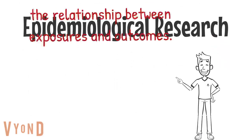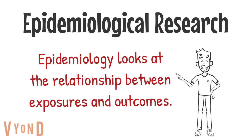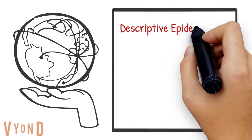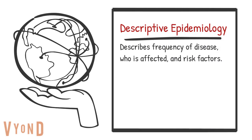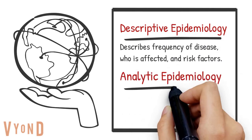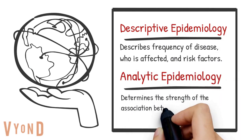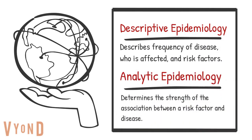Epidemiological research looks at the relationship between exposures and outcomes. Descriptive epidemiology describes disease frequency and risk factors in a population. Analytic epidemiology determines the strength of association between a risk factor and disease.